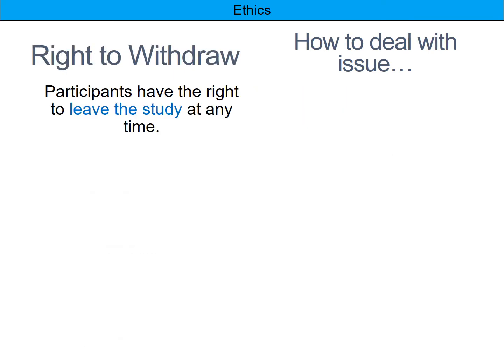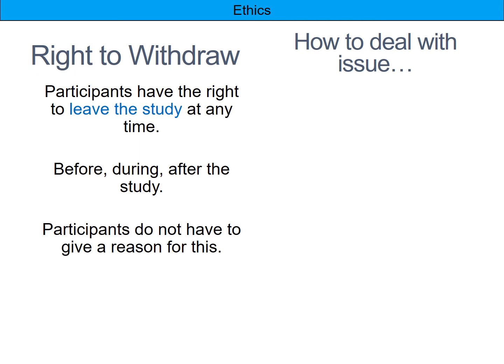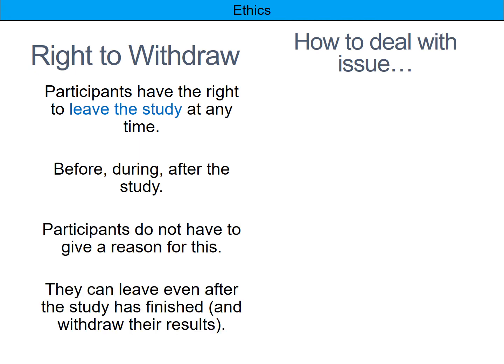Next, the right to withdraw. Participants have the right to leave the study at any point — before, during, or after the study. They might not consent in the first place, pull out during the study, or even after debriefing they still have the right to withdraw. They don't have to give a reason, so you can't ask them why they're leaving. If they withdraw after the study is finished, they would withdraw their results — you wouldn't be allowed to publish or use those results in any way.